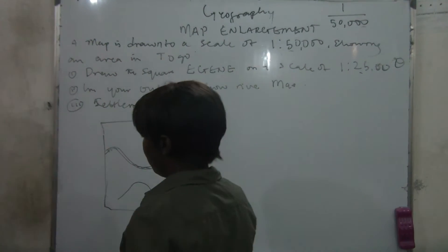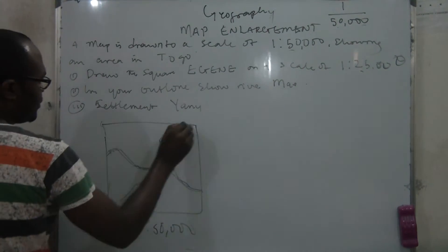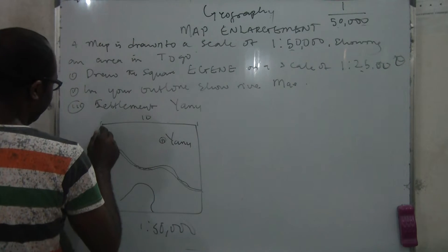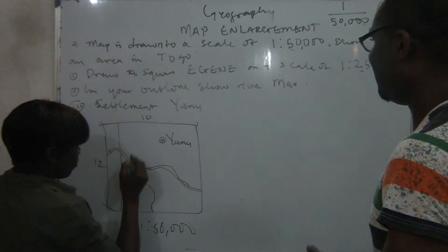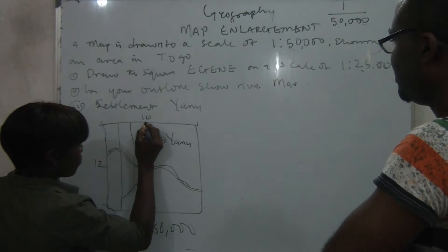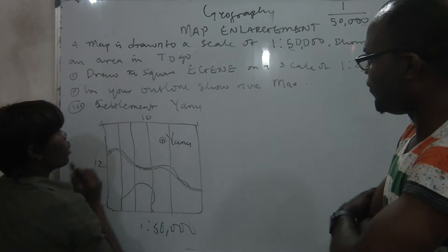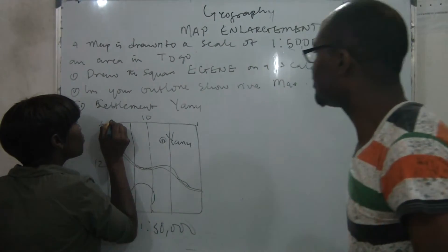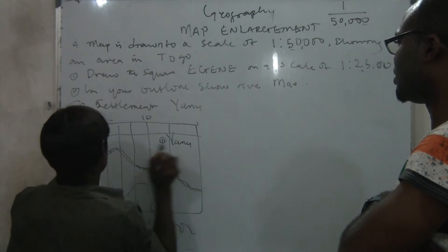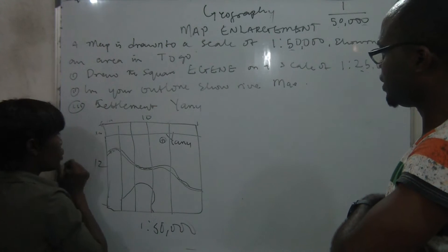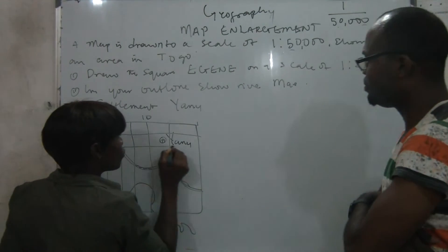First of all, you need to know the factor you are working with. Given that from here to here is 10cm and from here to here is 12cm, start work. You can divide your grid into however many equal parts you want. For the 10cm side divided into 5 parts, the spacing is 10 ÷ 5 = 2cm. For the 12cm side divided into 6 parts, the spacing is 12 ÷ 6 = 2cm. So you measure 2cm each.